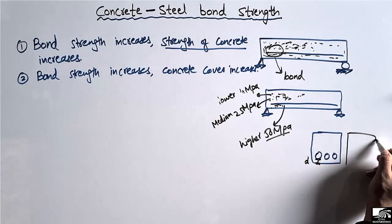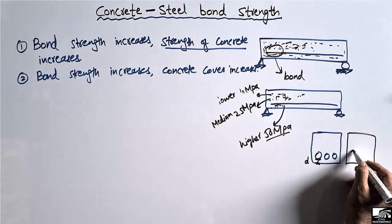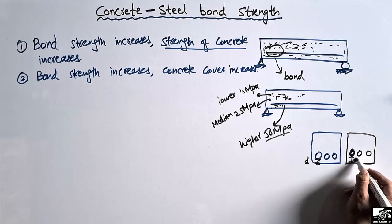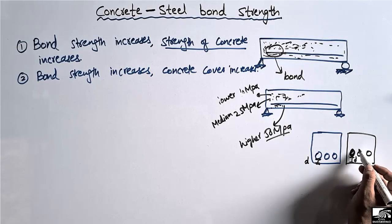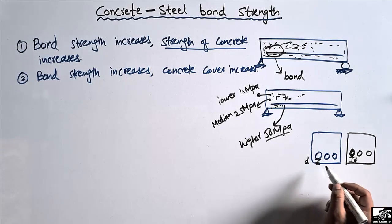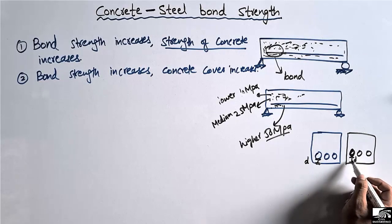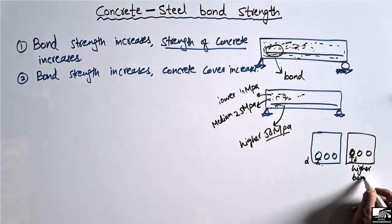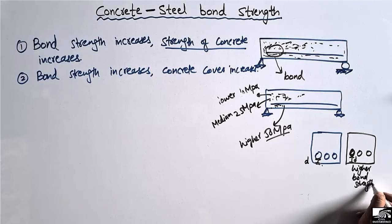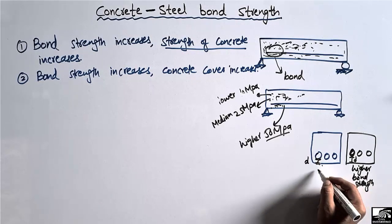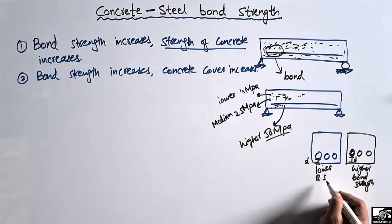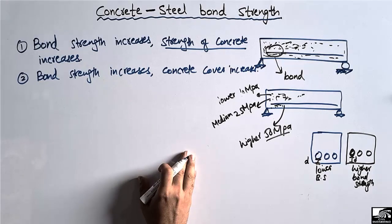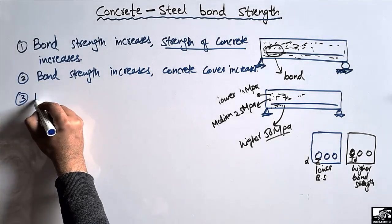Consider another beam where the steel bar is placed with a larger cover distance D compared to the first beam. In this case, there is higher bond strength because the distance available for bonding is greater. The first beam with smaller D has lower bond strength, while the second beam with larger D has higher bond strength.